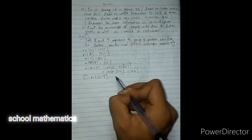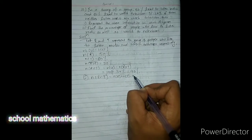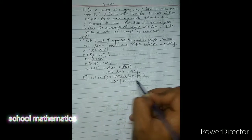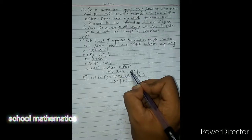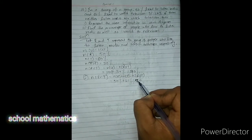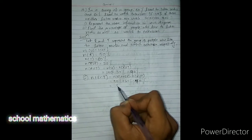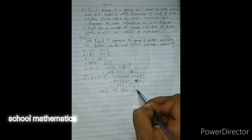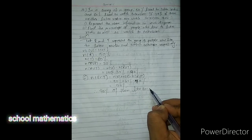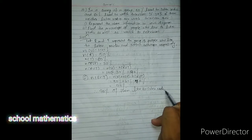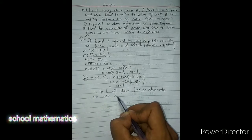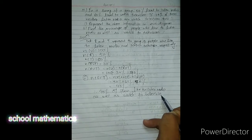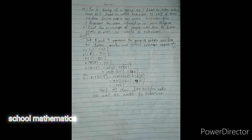Now let's find R intersection T. The formula is: number of R intersection T equals number of R plus number of T minus number of R union T. That is 50 plus 60 minus 70, which gives 110 minus 70 equals 40%. Therefore 40% of them like to listen to the radio as well as watch television — 40% like to do both activities.